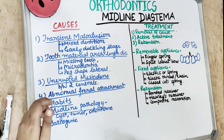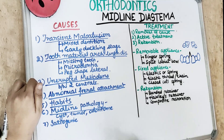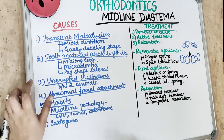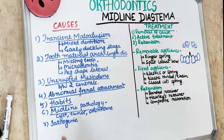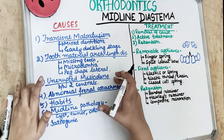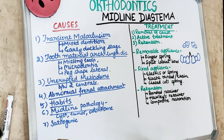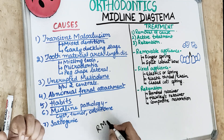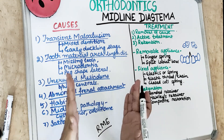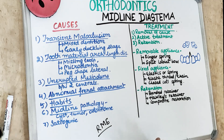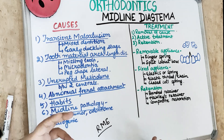Any pathology present in the midline — whether soft tissue or hard tissue, such as a cyst, tumor, or odontoma — pushes the surrounding structures and creates midline diastema. Unerupted mesiodens present between the roots of the central incisors also push those roots apart, causing midline diastema. Rapid maxillary expansion can open the intermaxillary suture, creating a midline diastema as well. There is also a racial predisposition, as some negroid races present with midline diastema.